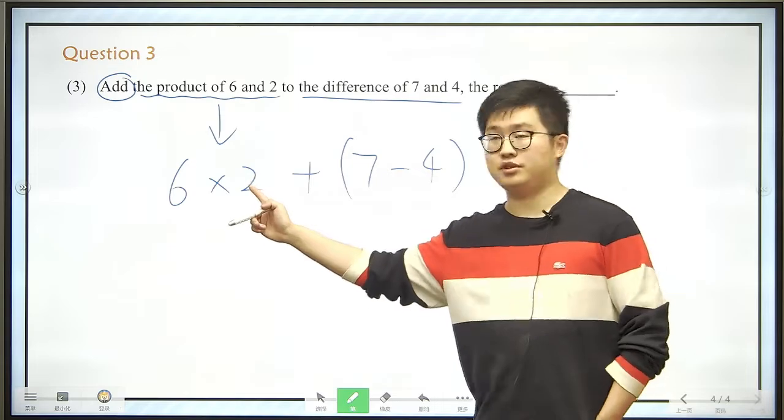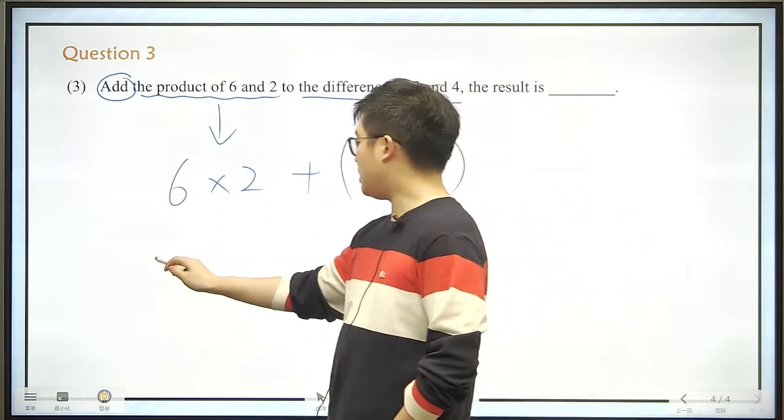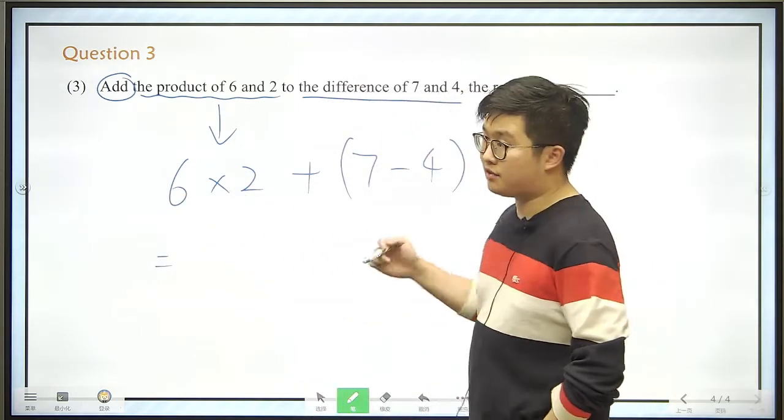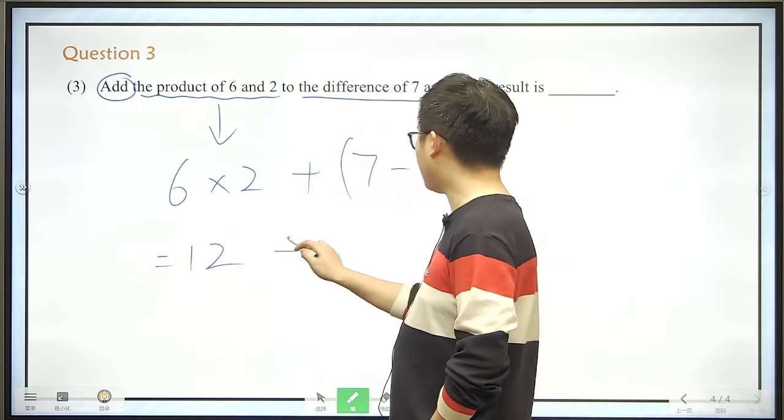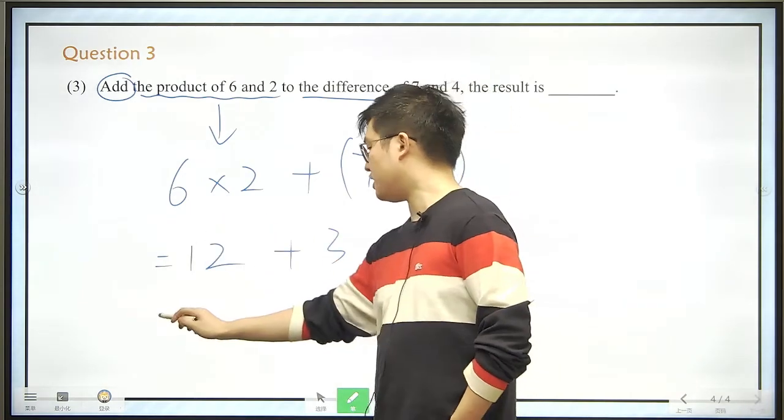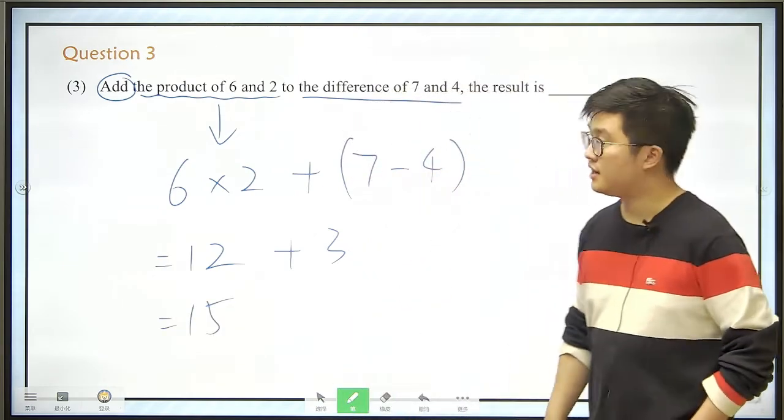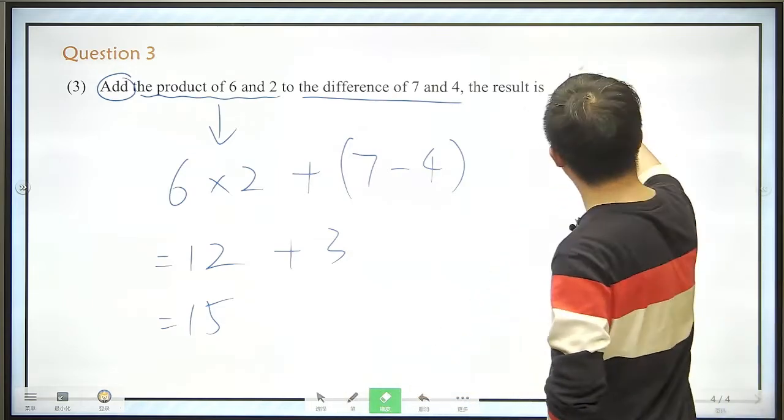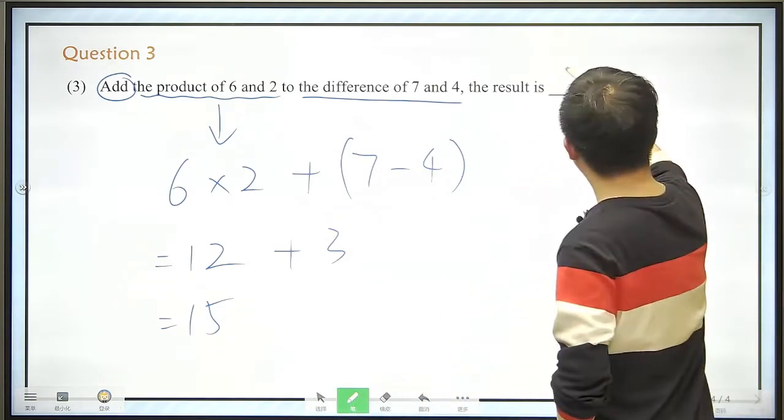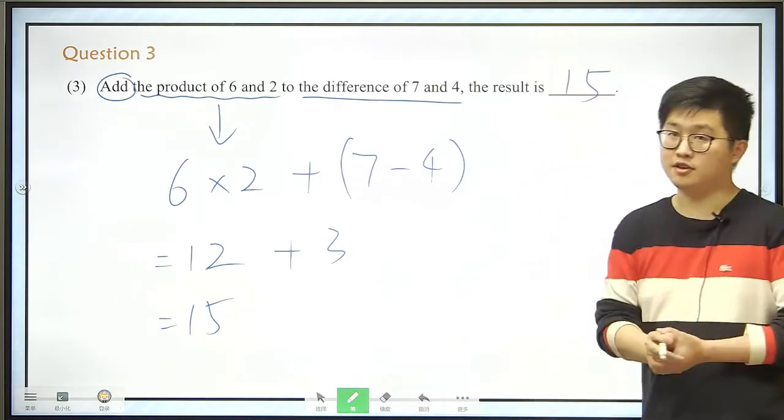So if you do this correctly, then the rest part of it would be very easy. This is 12, and this is 3. Add them up, it ends up 15. So 15 is the right answer. Sorry, just rewrite it perhaps. 15. So this is all for today.